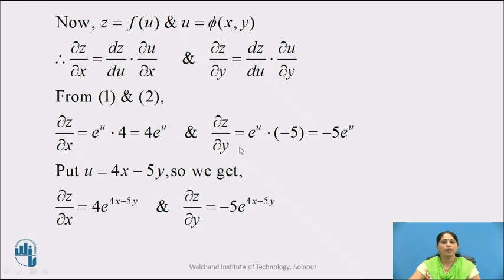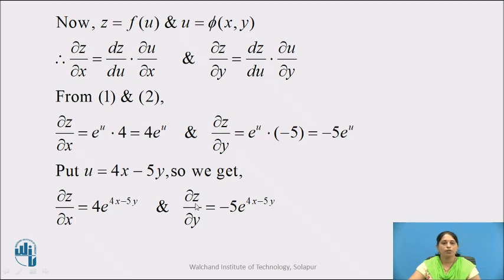And ∂z/∂y = e^u · (−5) = −5e^u. To express the solution in terms of x and y, we substitute u = 4x − 5y. So ∂z/∂x = 4e^(4x−5y) and ∂z/∂y = −5e^(4x−5y).